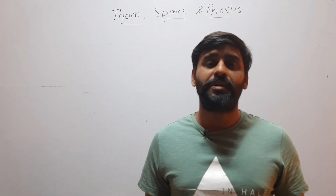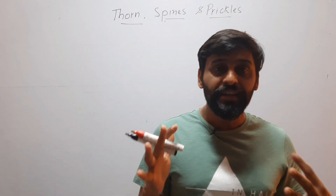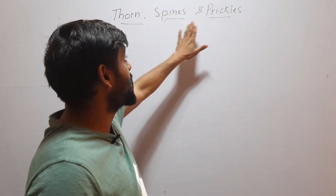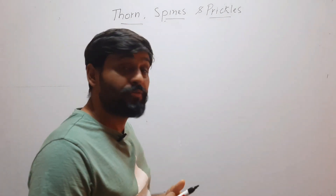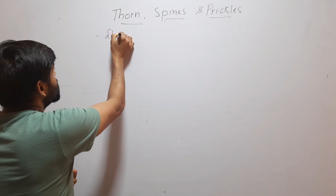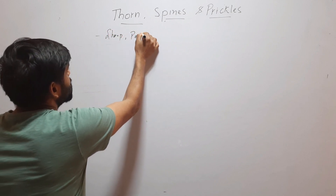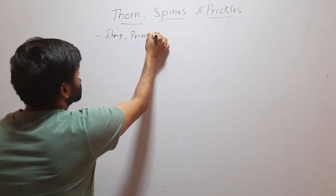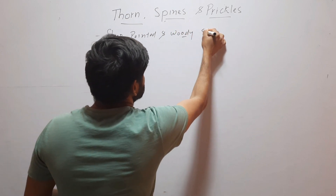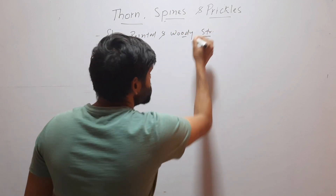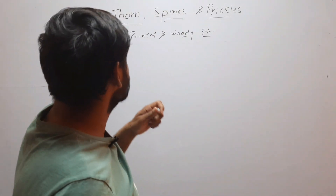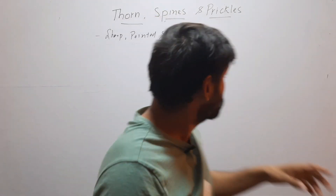Hello friends, welcome to my YouTube channel. In this video we will discuss these three terms: thorn, spine and prickles. We know that all these three terms are sharp, pointed and woody structures that are present on plants. So what is the difference between these three terms? We will discuss these three one by one.